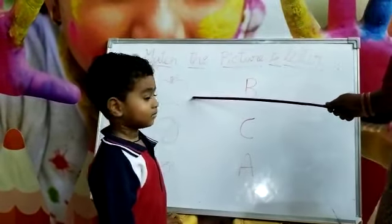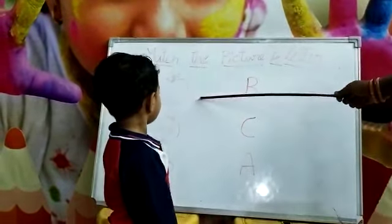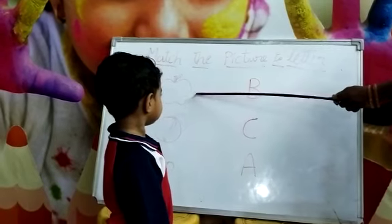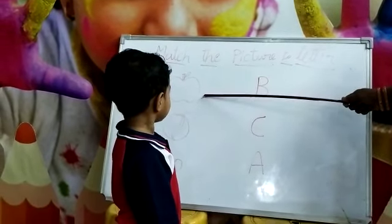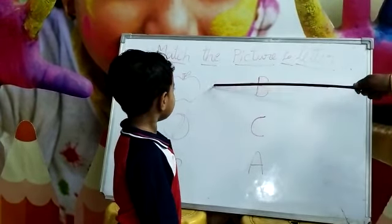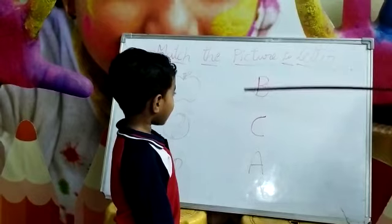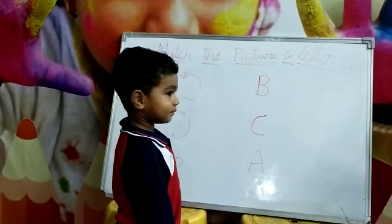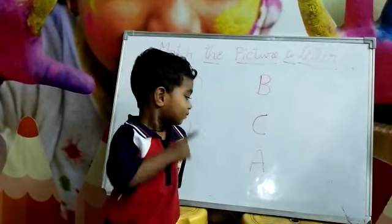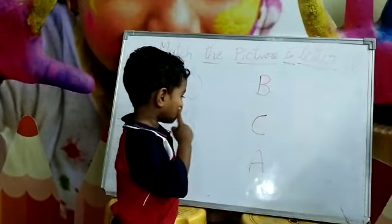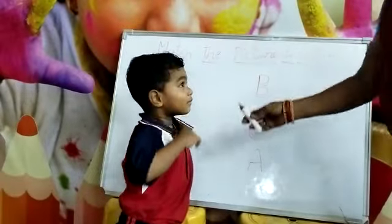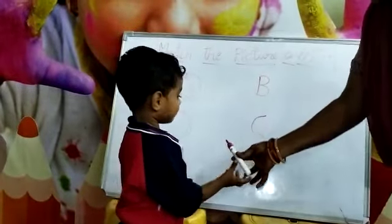What is this picture? A. What is this picture? A for apple. Where is the A letter? Good. Match the apple to letter.